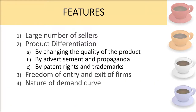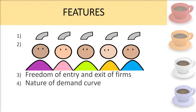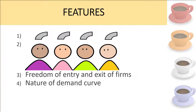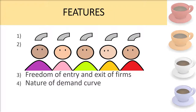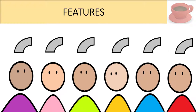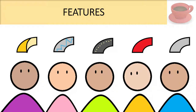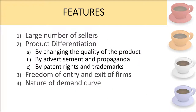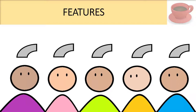The third feature of monopolistic competition is freedom of entry and exit of firms. The firms are small in size and capable of producing close substitutes, so it's possible for them to leave or enter the industry in the long run. Because there is product differentiation, there is more entry of new firms, and each firm produces a distinct product.